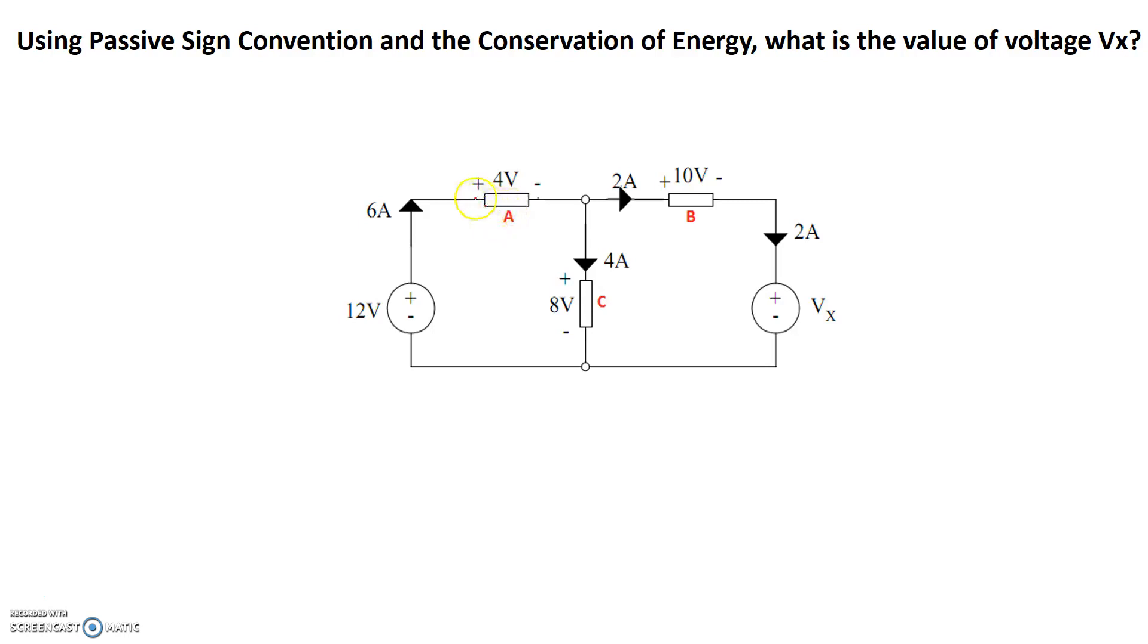We see that on element A, current flows into the positive terminal of 4 volts and exits out of the negative terminal. So this is following passive sign convention. Since it's following passive sign convention, the power on this particular case should be just 6 amps times 4 volts. 6 times 4 is 24, so positive power, 24 watts.